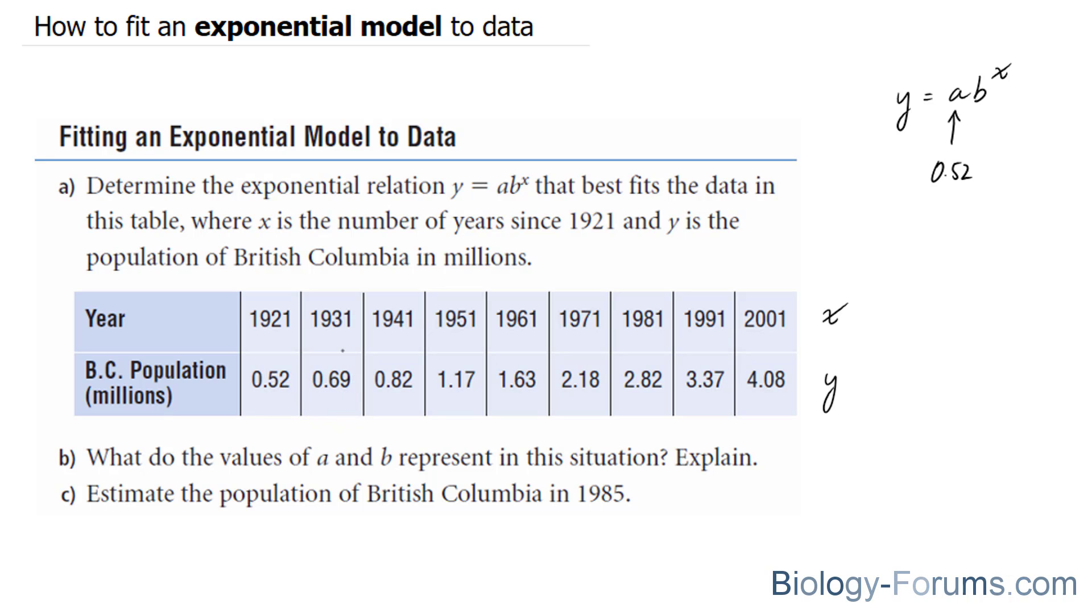And what I mean by that is 0.69 needs to be divided by 0.52. And subsequently, this number needs to be divided by this number, and so on.